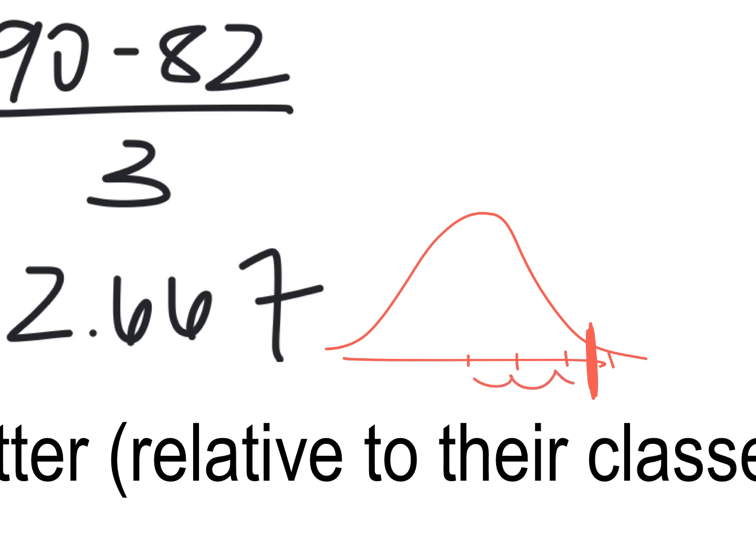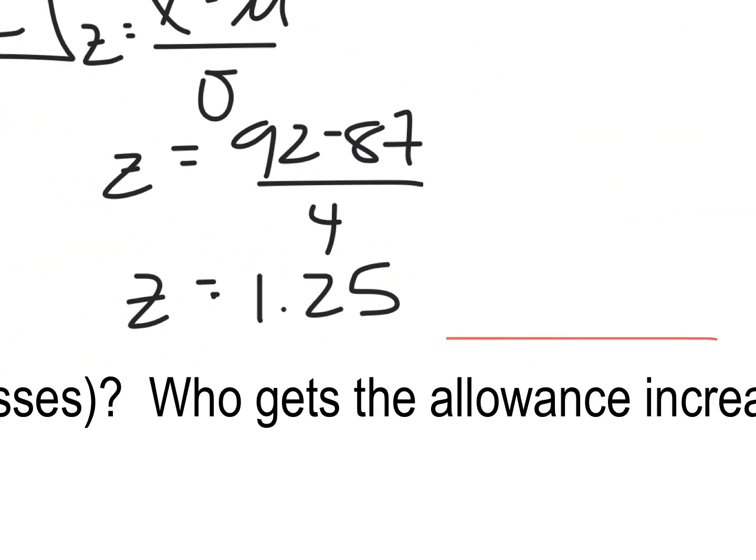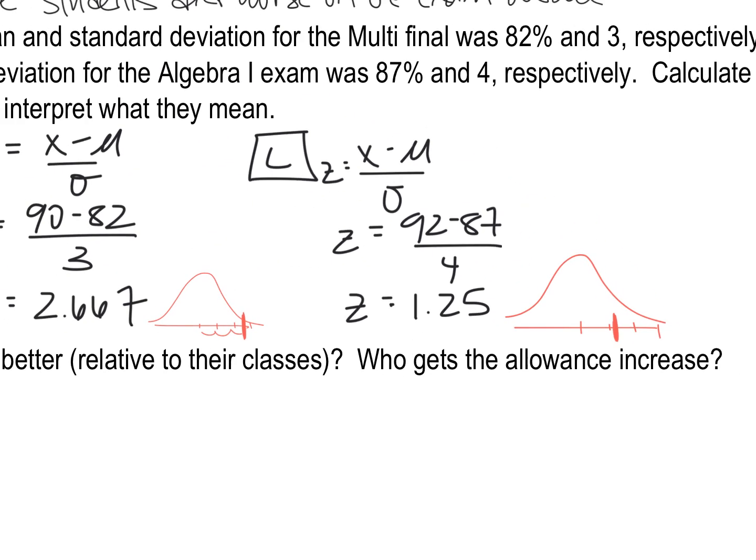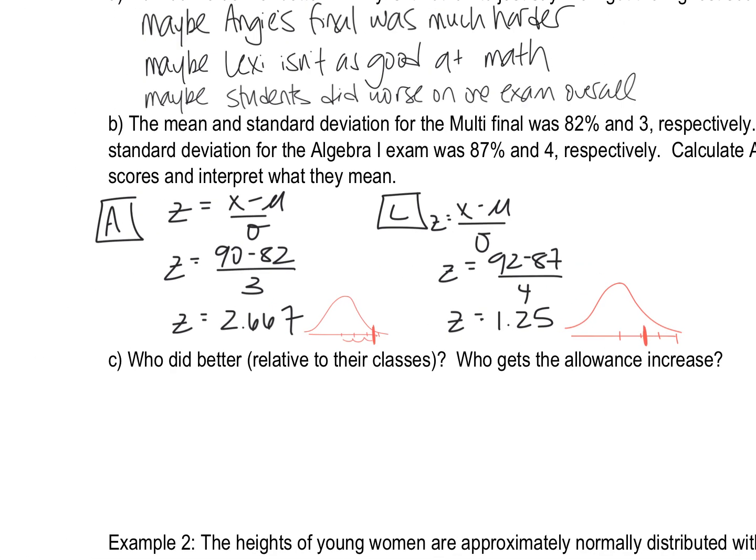One, two, and a little bit more standard deviations above the mean. Versus Lexi's score is only 1.25. One, two, three. So like right here. That's where Lexi's score is. So which one did better than average for their class? Angie wins.